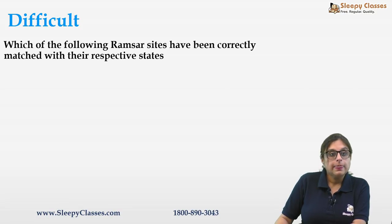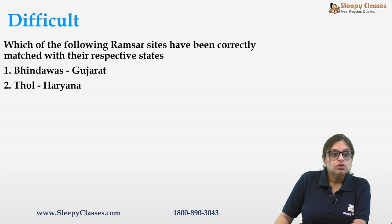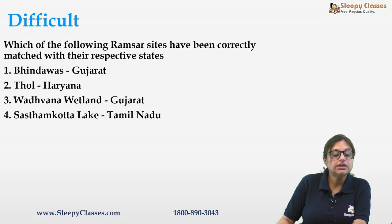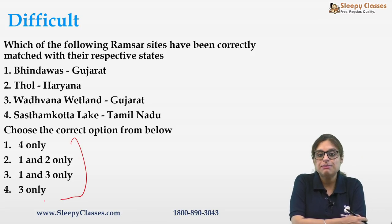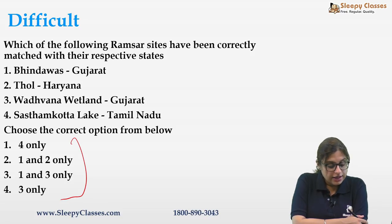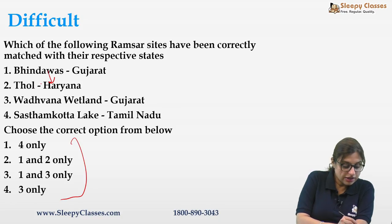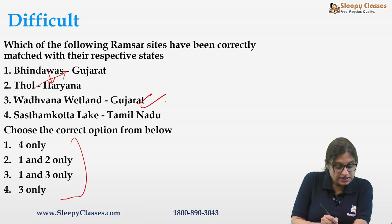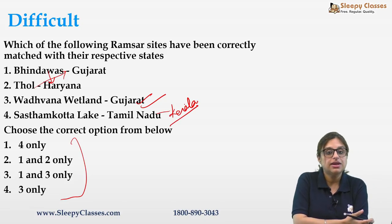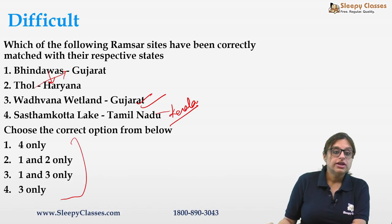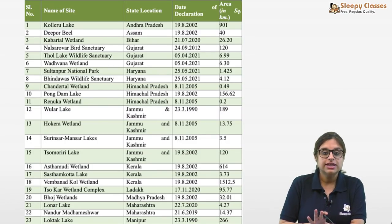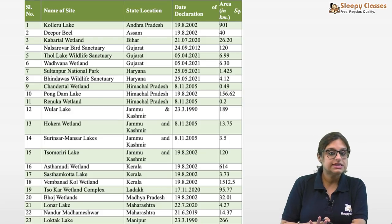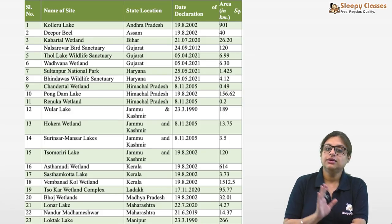Next question asks which Ramsar sites are correctly matched with their states: Vindhavas–Gujarat, Thol–Haryana, Wadwana–Gujarat, Sasthamkotta–Tamil Nadu. The correct answer is only the third one (Wadwana–Gujarat). Actually: Vindhavas is in Haryana, Thol is in Gujarat, Wadwana is in Gujarat, and Sasthamkotta is in Kerala. India has 46 Ramsar wetlands and you should know which state has how many — and which state has none.